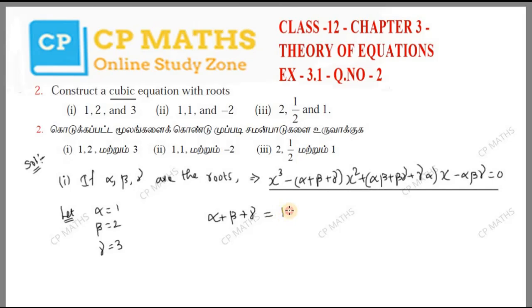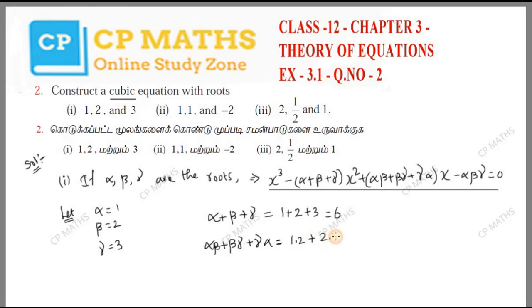The sum of pairs of roots — alpha beta plus beta gamma plus gamma alpha — is 1 into 2 plus 2 into 3 plus 3 into 1. That gives 2 plus 6 plus 3, so the answer is 11.